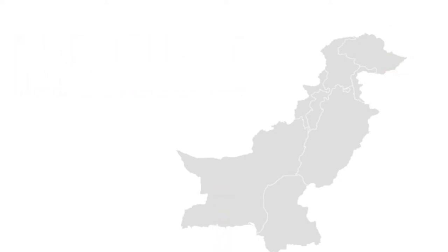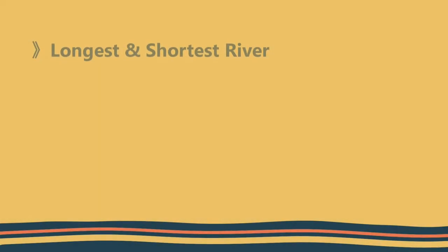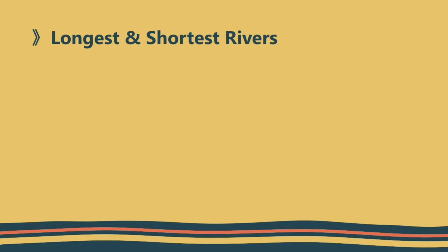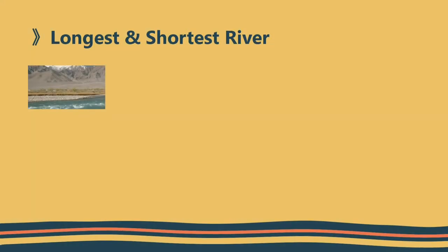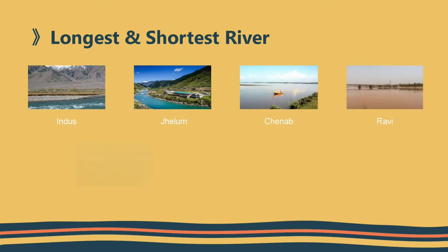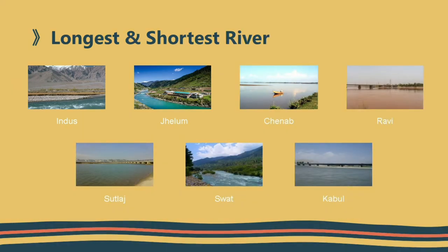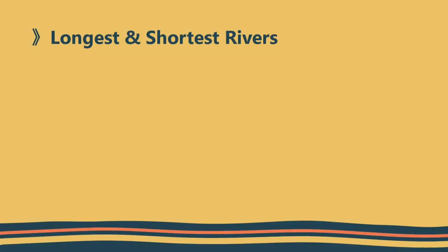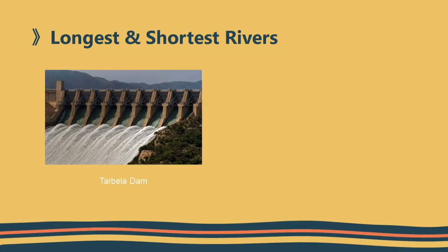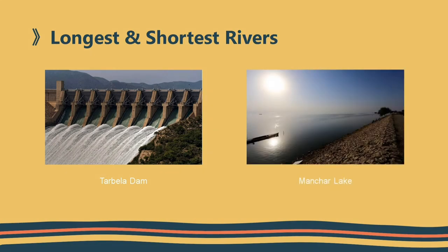The next point is longest and shortest rivers. Important rivers of Pakistan are the Indus River, Jhelum River, Chenab, Ravi, Sutlej, and Kabul River, in which the Indus River is the longest and Ravi is the shortest. The largest dam of Pakistan is Tarbela Dam, which is situated on the Indus River. The largest lake of Pakistan is Manchar Lake, situated in Sindh.